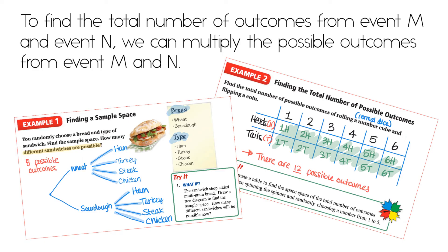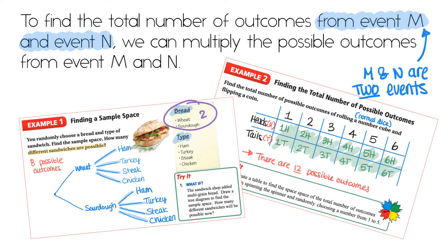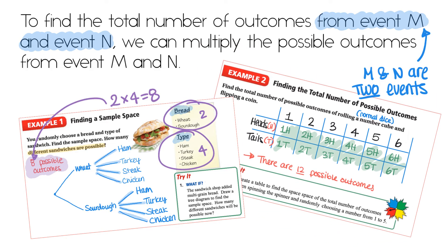Perhaps you've noticed from the last couple of examples, there's a quick way to determine the total number of possible outcomes. To find the total number of outcomes from event M and event N, which just means two different events, we can multiply the possible outcomes from event M and event N. For example, with the type of sandwiches and the bread, we had two possible bread outcomes and four possible sandwich types. Two times four gave us eight, which is why in this example there were eight possible outcomes. In the second example with the coin and the dice, the dice has six possible outcomes and the coin has two possible outcomes. Six times two gives us 12, which is why this one had 12 different possible outcomes.